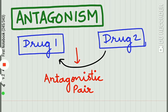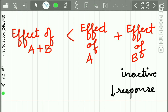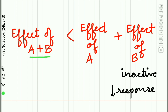Now let us study antagonism. When one drug decreases or abolishes the action of another drug, they are said to be antagonistic. If drug two reduces or abolishes the effect of drug one, then drug one and drug two are called an antagonistic pair. The combined effect of drug A and B is always less than the individual effect of either drug alone. Usually in an antagonistic pair, one drug is inactive and it reduces the response of the other.